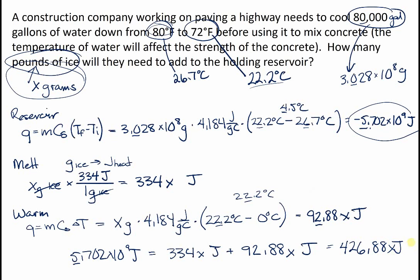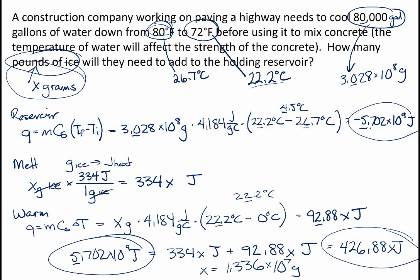We can divide both sides by 426.88 joules and we get x = 1.336 times 10 to the 7 grams. Remember we had units of grams for that x value.